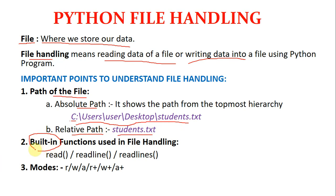The next point you need to understand is built-in functions. There are three built-in functions: read, readline, and readlines. These three functions we are going to use in our programs. Built-in means these functions have a special meaning to the system. When we use read, readline, or readlines, they each have a special meaning to the system — that is why they are called built-in functions. A function or method means something which has parentheses.